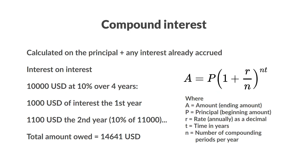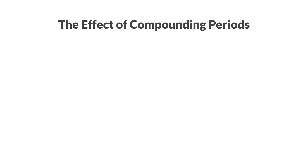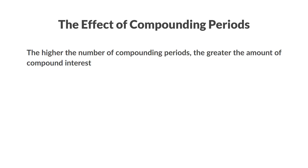One more quick thing to note before we move away from plain definitions is the effect of compounding periods, as it can make a significant difference. The higher the number of compounding periods, the greater the amount of compound interest. This effect has diminishing returns though, meaning that the difference falls off very quickly as the number of periods rises, and you'll seldom see compounding calculated more often than monthly. Annually, semi-annually, quarterly, and monthly are common, widely used options.